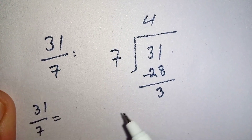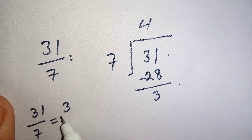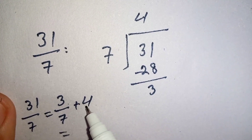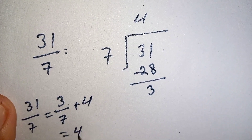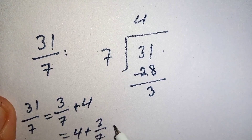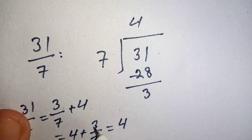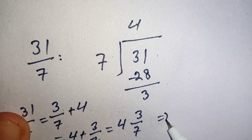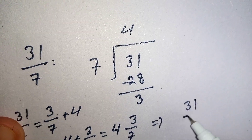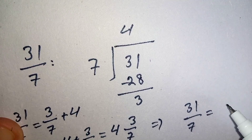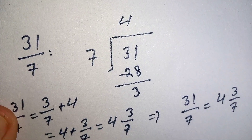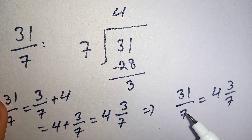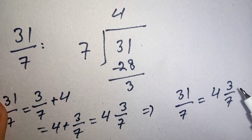So 31 over 7 is equal to 3 divided by 7 plus 4, which gives us 4 plus 3 over 7, and that is equal to 4 and 3 over 7. So we can say that when we convert 31 over 7, the final answer is that the improper fraction 31 over 7 converts to the mixed number 4 and 3 over 7.